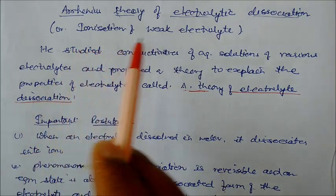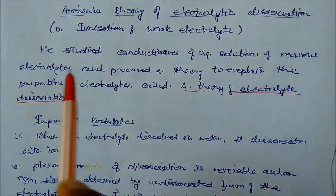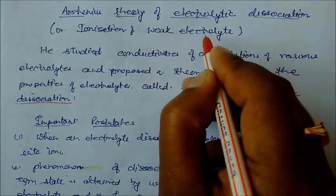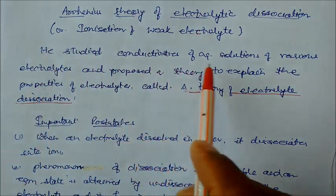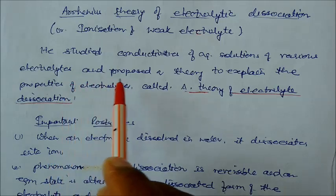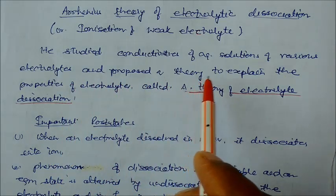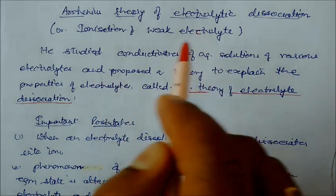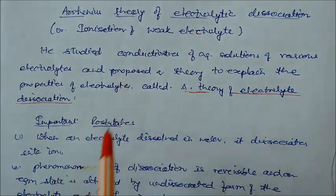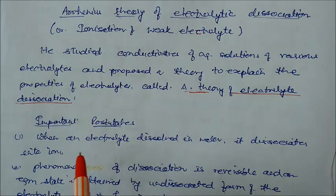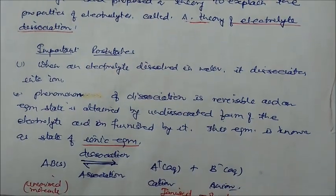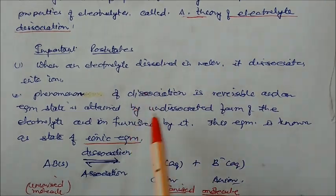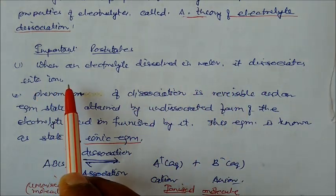In this lecture we will study the Arrhenius theory of electrolytic dissociation or ionization of a weak electrolyte. Mr. Arrhenius studied the conductivities of aqueous solutions of various electrolytes and proposed a theory to explain the properties of electrolytes. We are going to study this theory in the form of postulates — it is called the Arrhenius theory of electrolytic dissociation.